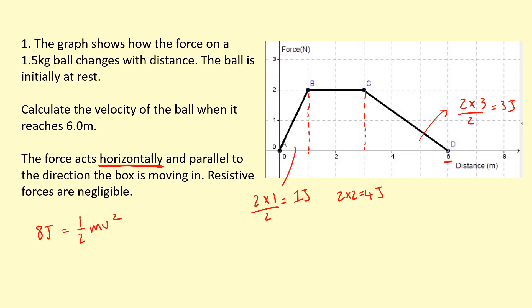And m we know is 1.5. So to rearrange this equation, I'll get 8 joules times 2 divided by the mass 1.5, and then square root that to get the velocity. And we should get 3.3 meters per second.